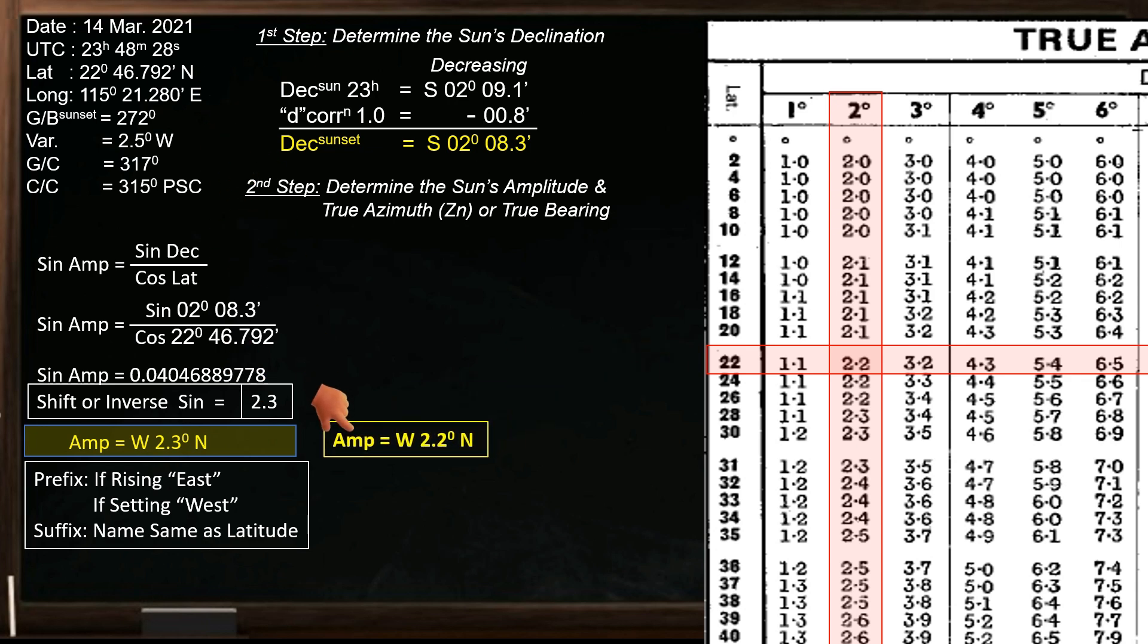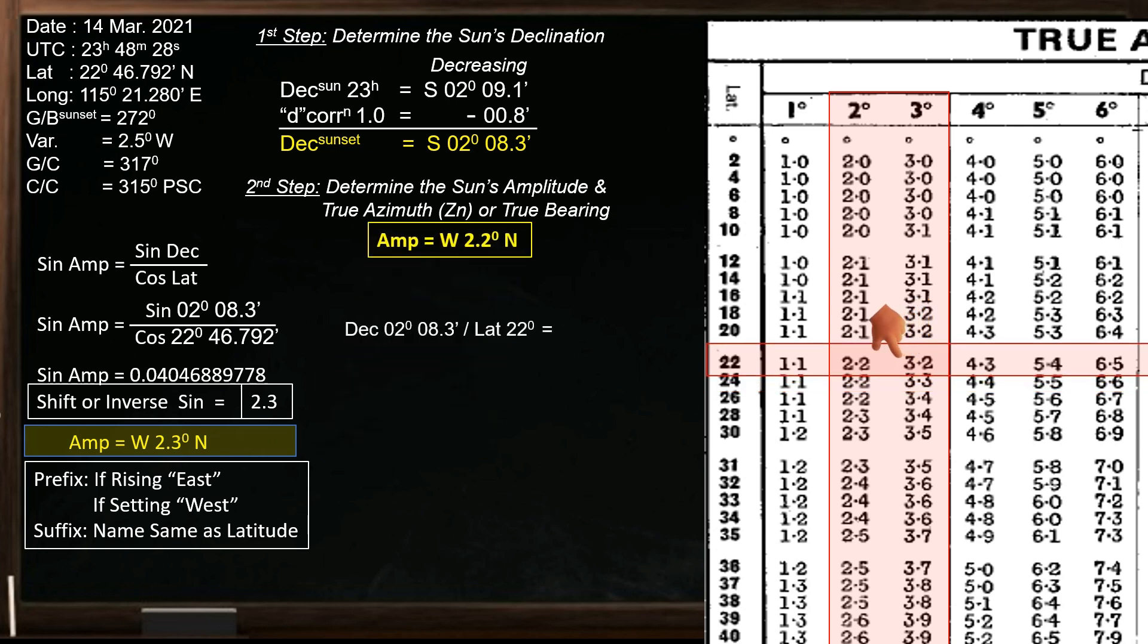If we want a more precise value, we go through interpolation. At 2 degrees declination, along latitude 22 and 24 degrees, the amplitude is the same. But at declination 2 and 3 degrees, the difference is 1 degree. Let's interpolate the amplitude at declination 2 degrees, 8.3 minutes.